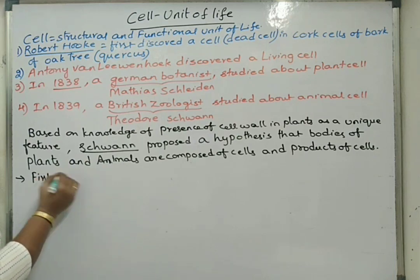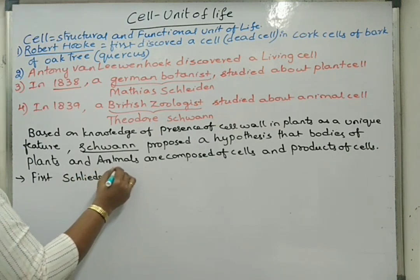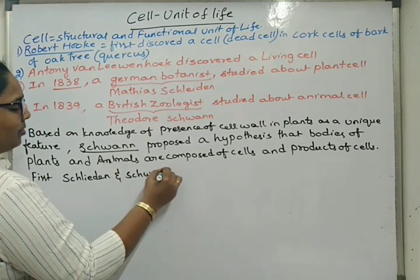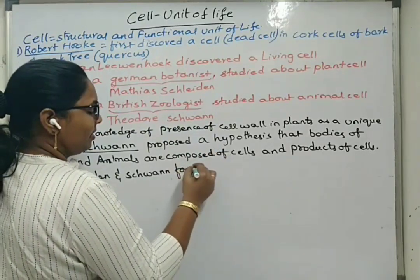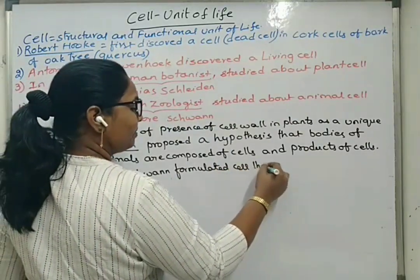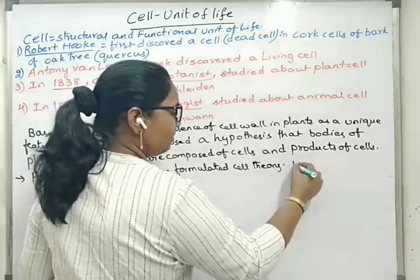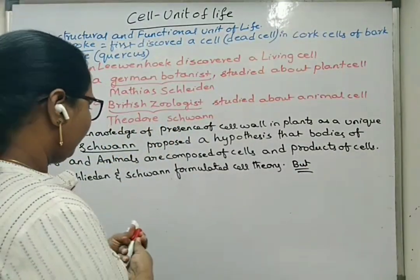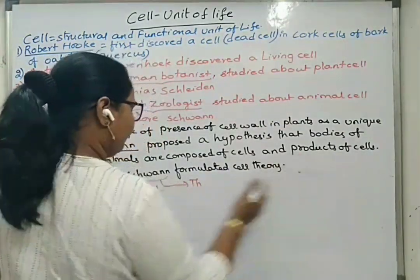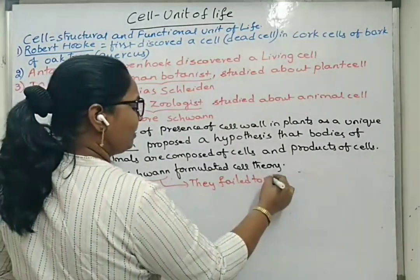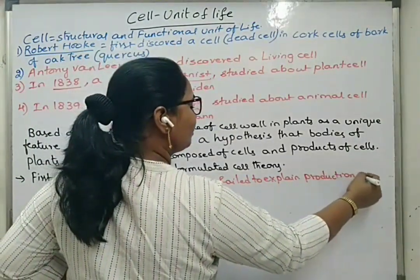Initially, Schleiden and Schwann are considered to have proposed and formulated the cell theory. However, they failed to explain how new cells are produced — that is, they failed to explain the production of new cells.